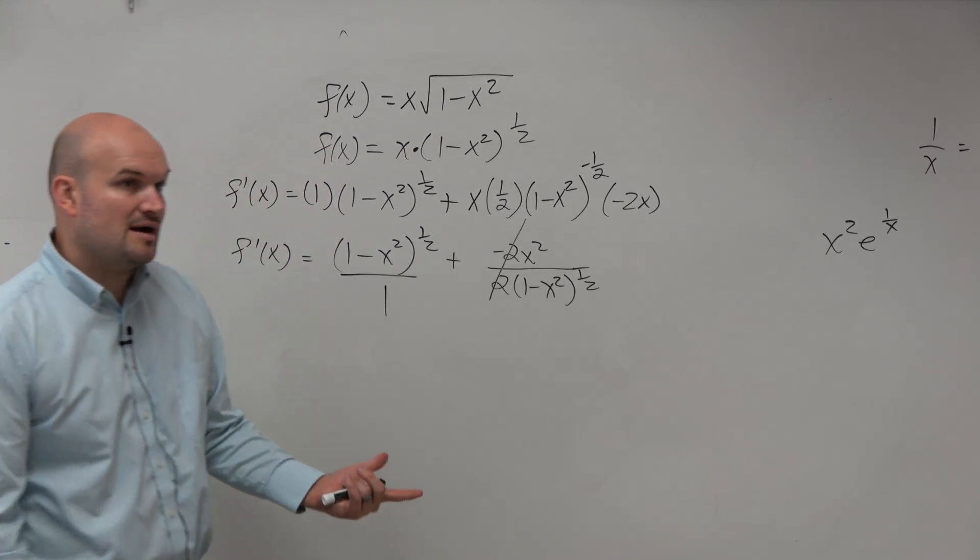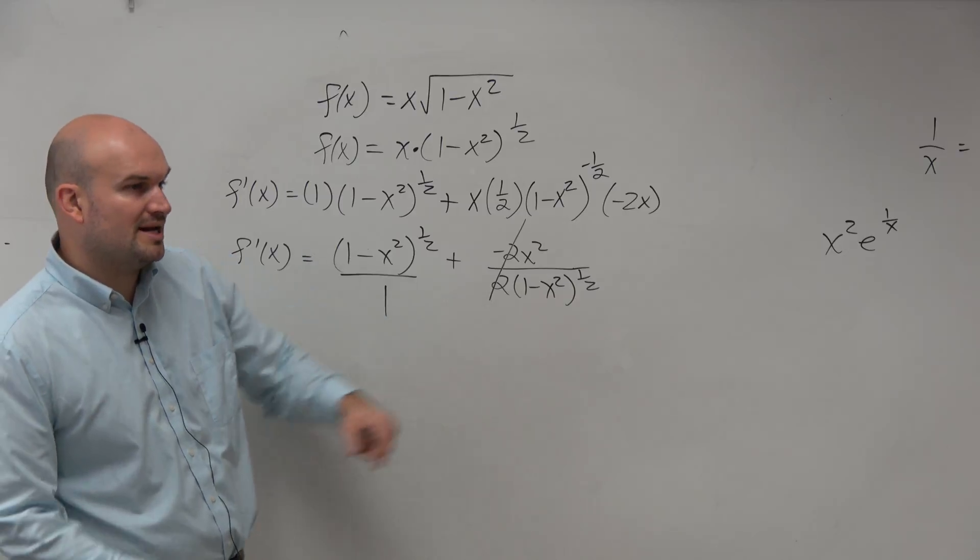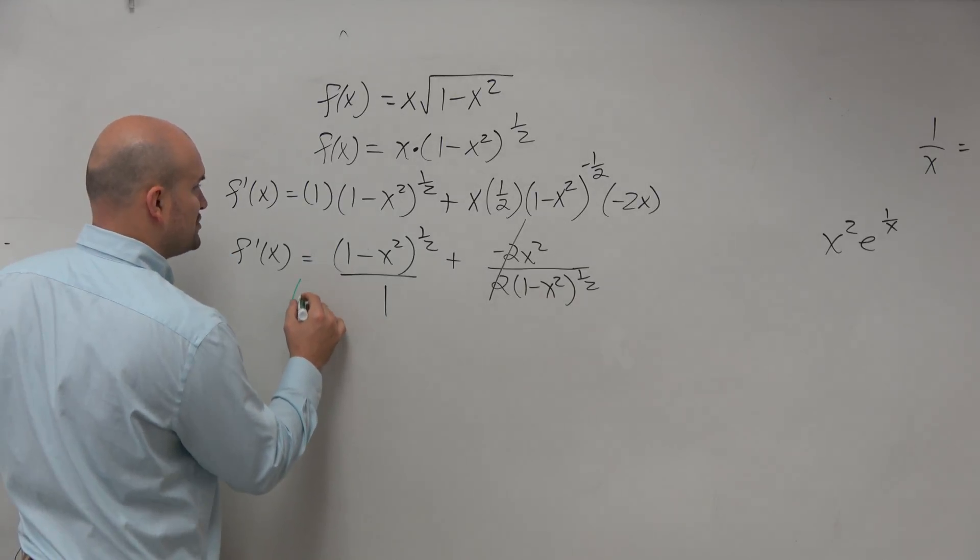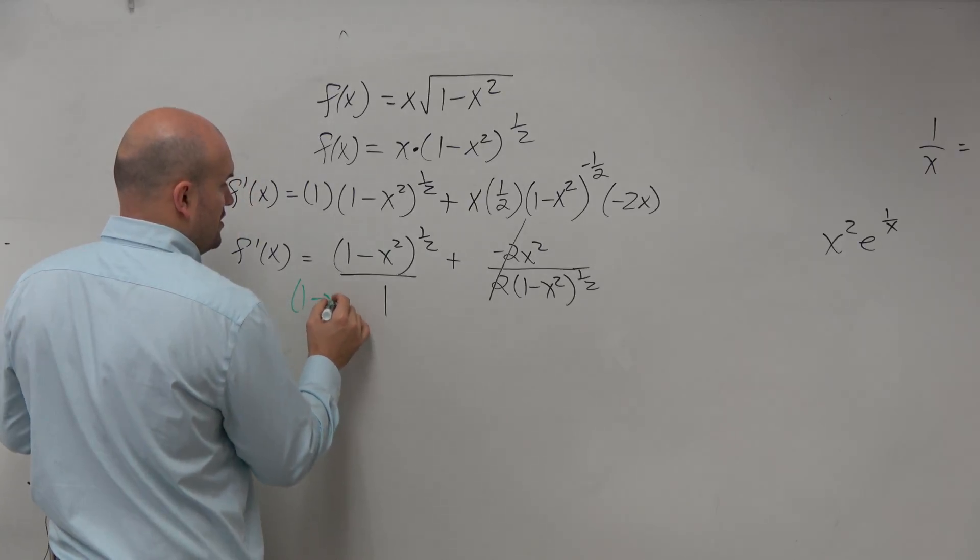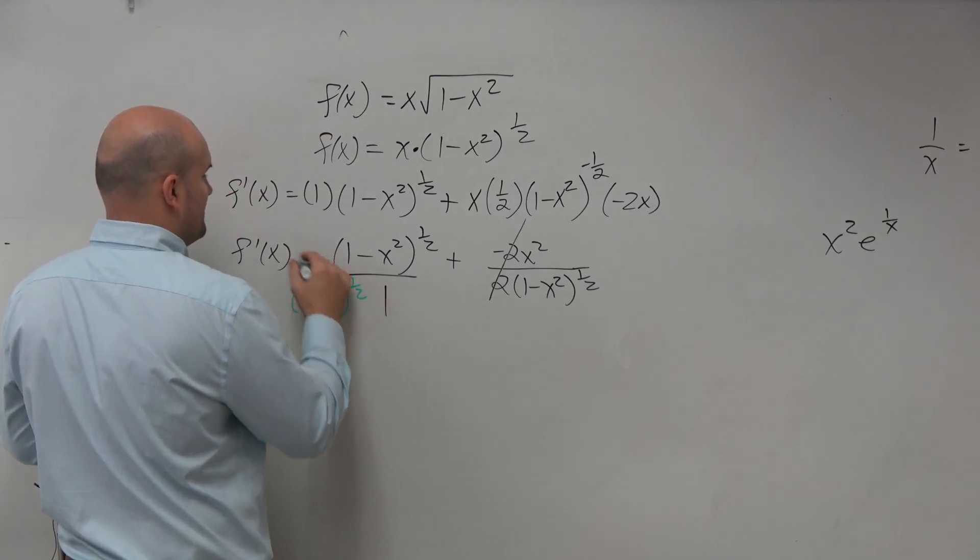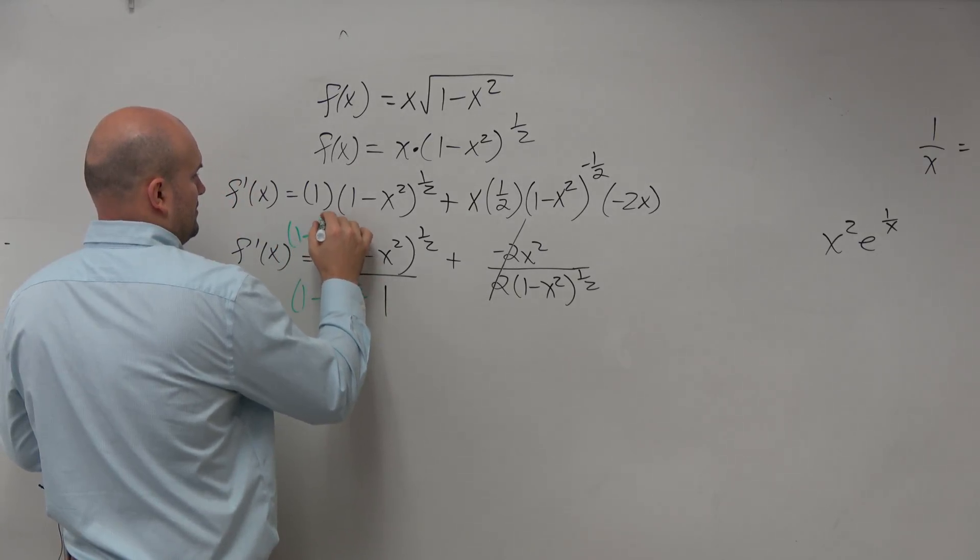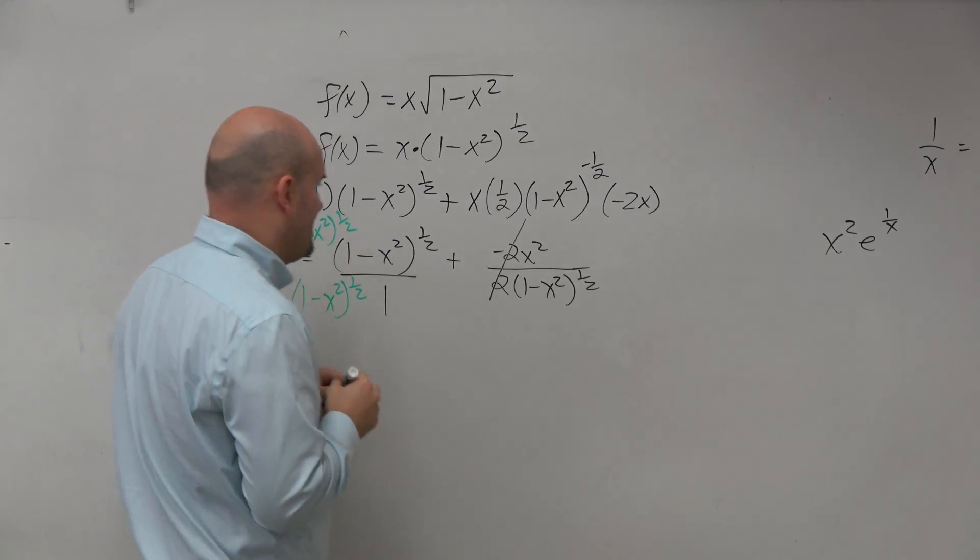If I want to get these together, I've got to find the common denominator. Well, the common denominator is 1 minus x squared raised to the 1 half. So that's what I'm shown doing. And I multiply that on both sides.